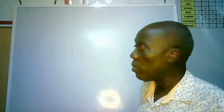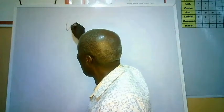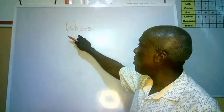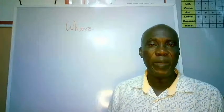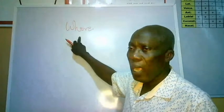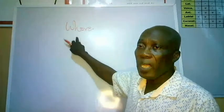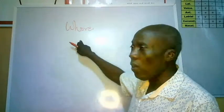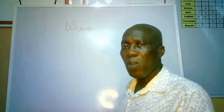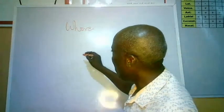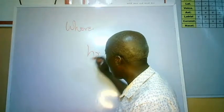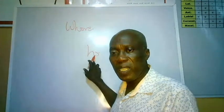Let's look at this example: W-H-O-R-E in the spelling. If we are to pronounce this, how is it to be pronounced? This word is 'whore.' If we look at it closely, the word contains just two sounds: the glottal fricative and vowel number 7.